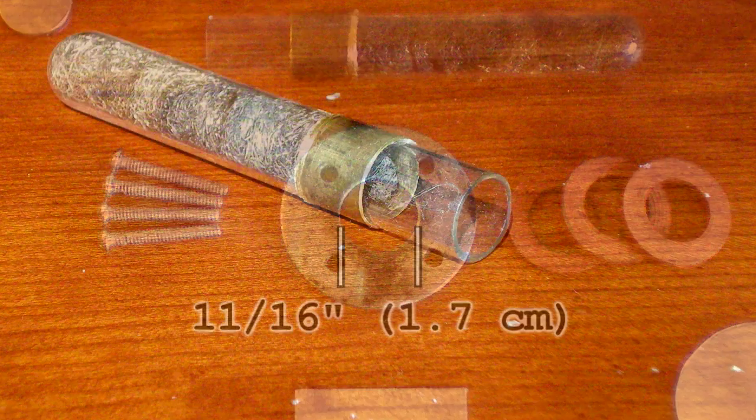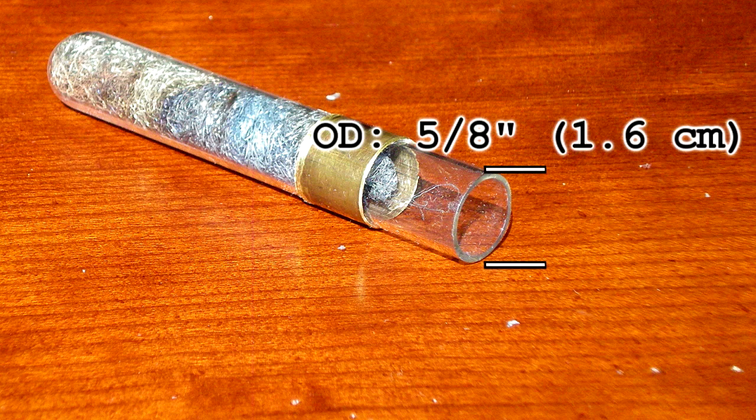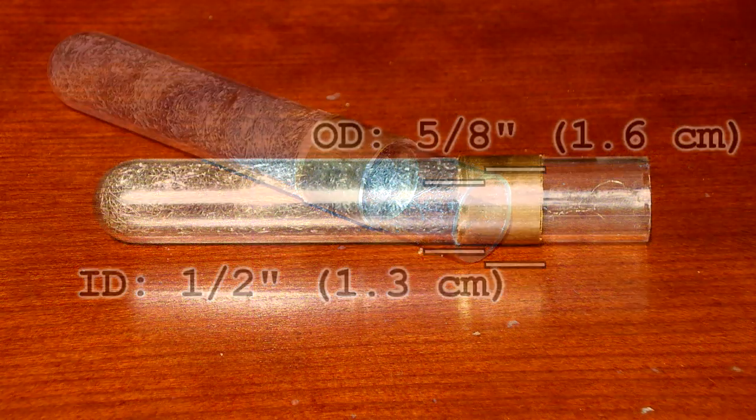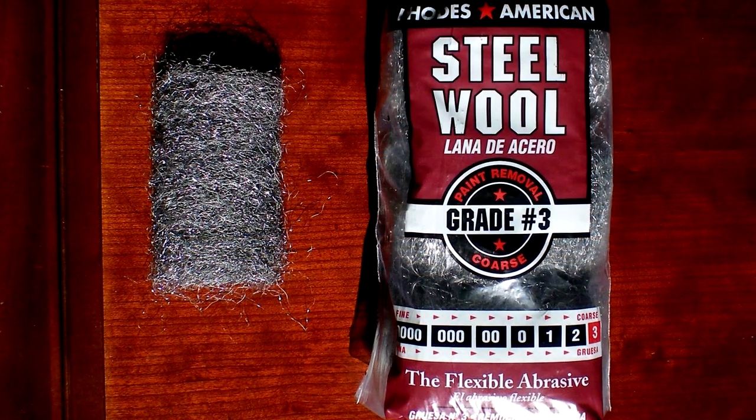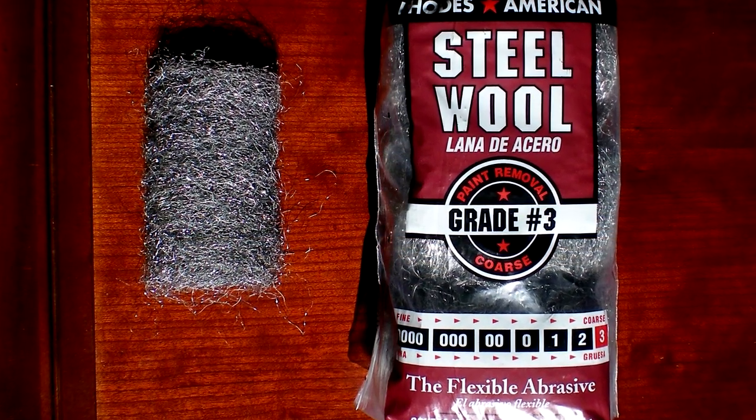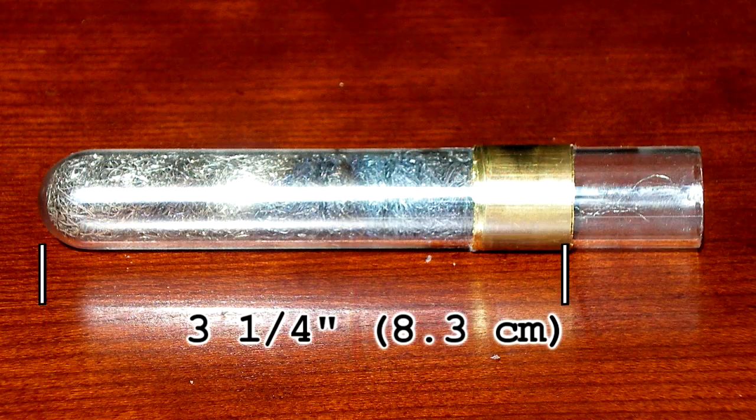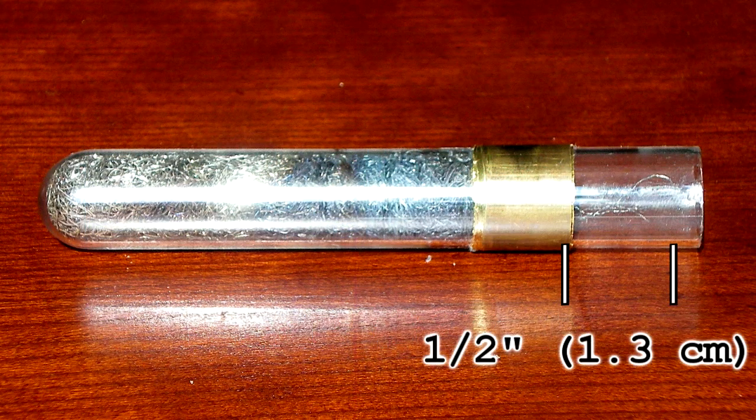The outer diameter of the Pyrex test tube is 5 eighths of an inch. The inner diameter is 1 half inch. The height of the test tube is 4 inches. Inside the test tube is grade number 3 steel wool. The bulk of the steel wool ends at 3 and 1 quarter inches and a couple little strands stick out another half inch.